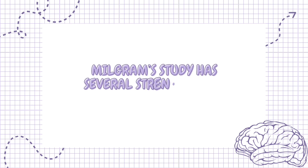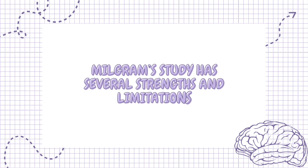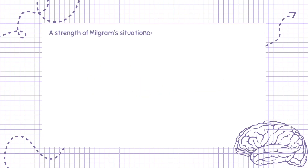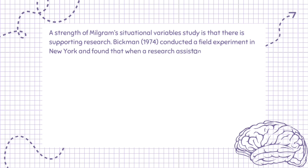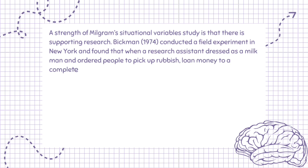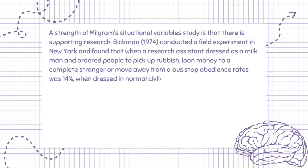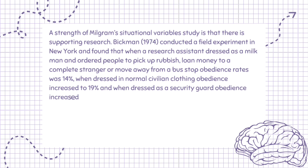Milgram's study has several strengths and limitations. A strength of Milgram's situational variables research is that there is supporting research. Bickman (1974) conducted a field experiment in New York and found that when a research assistant dressed as a milkman and ordered people to pick up rubbish, loan money to a complete stranger, or move away from a bus stop, obedience rates were 14%.